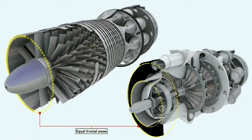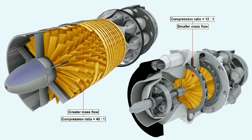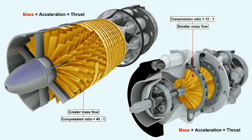If we compare two compressors — one centrifugal and the other axial — each having the same frontal cross-sectional area, we find first that the axial flow compressor can take in a far greater mass of air than the centrifugal compressor, and second that much higher compression ratios can be attained in the axial flow compressor. Since thrust depends partly on mass airflow, an engine with an axial flow compressor will generate more thrust than one with a centrifugal compressor of the same frontal area.